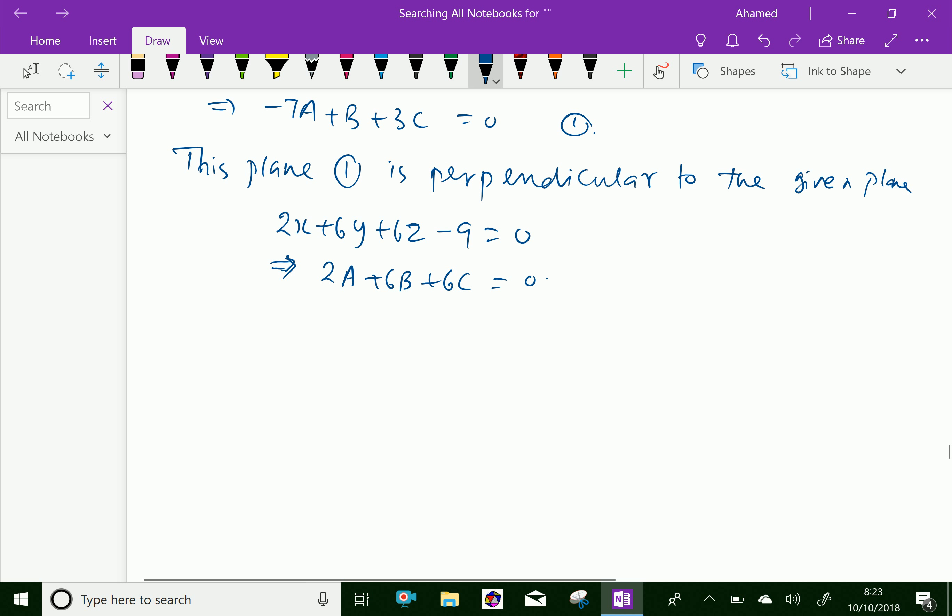Now we have the two relations: -7A + B + 3C = 0 and 2A + 6B + 6C = 0.